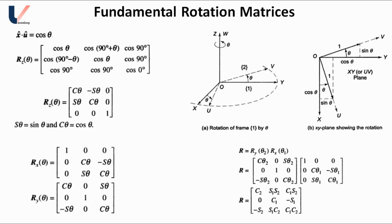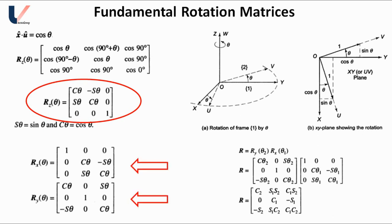The rotation matrix is given by x̂·û, x̂·v̂, and x̂·ŵ as the first row, and similarly the second and third rows. When two frames are rotated by angle theta about the Z-axis, x̂·û equals cos(theta), and similarly we can find the other dot products. The rotation matrix in this case is: [cos θ, −sin θ, 0; sin θ, cos θ, 0; 0, 0, 1]. This is the rotation matrix about the Z-axis. Similarly, rotation matrices for the X-axis and Y-axis are derived.